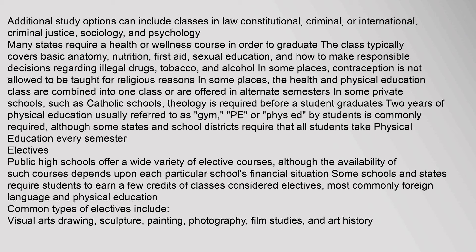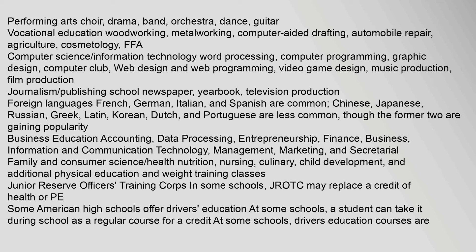Public high schools offer a wide variety of elective courses, though availability depends upon each school's financial situation. Some schools and states require students to earn a few credits in classes considered electives, most commonly foreign language and physical education. Common types of electives include Visual Arts such as Drawing, Sculpture, Painting, Photography, Film Studies, and Art History; and Performing Arts such as Choir, Drama, Band, Orchestra, Dance, and Guitar.